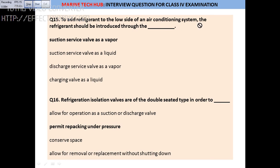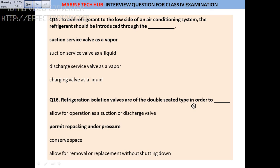Question 15: To add refrigerant to the low side of an air conditioning system, the refrigerant should be introduced through the suction service valve as a vapor only — not as liquid.